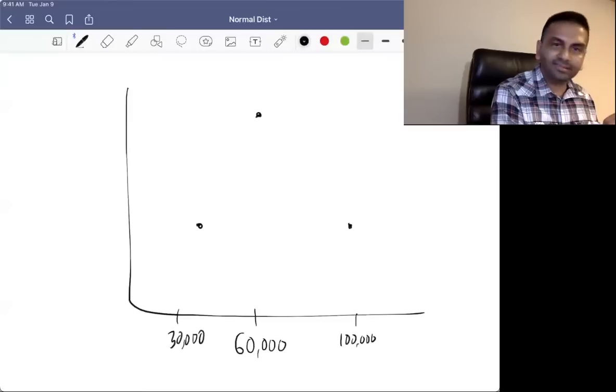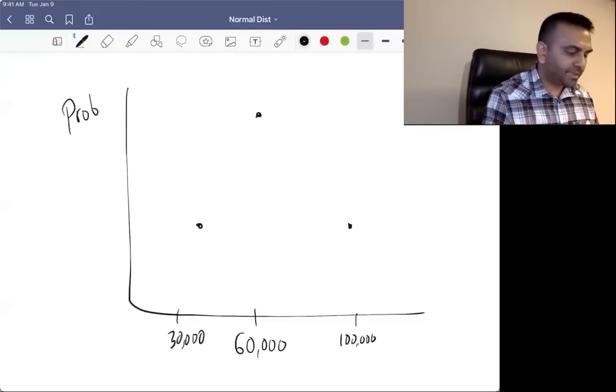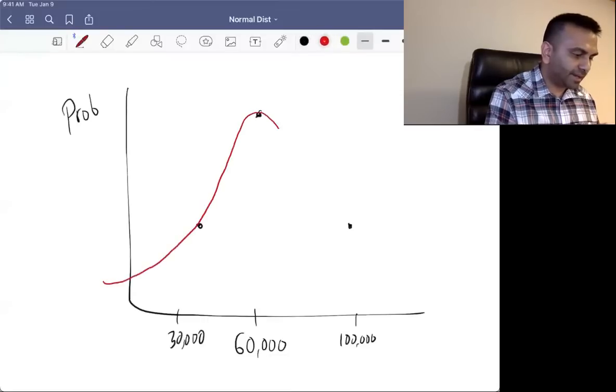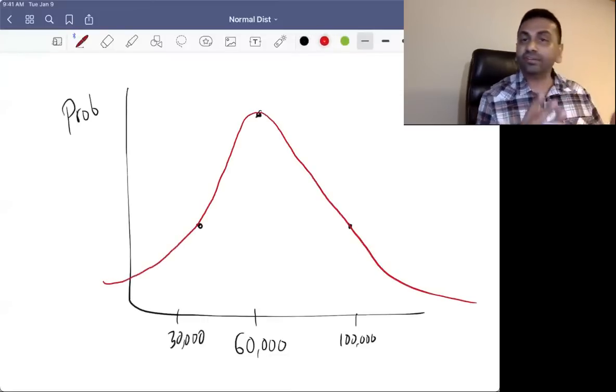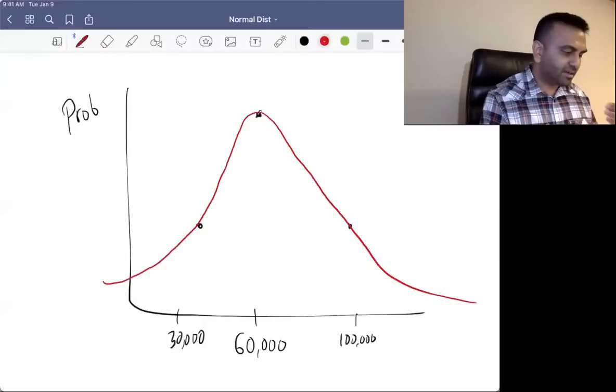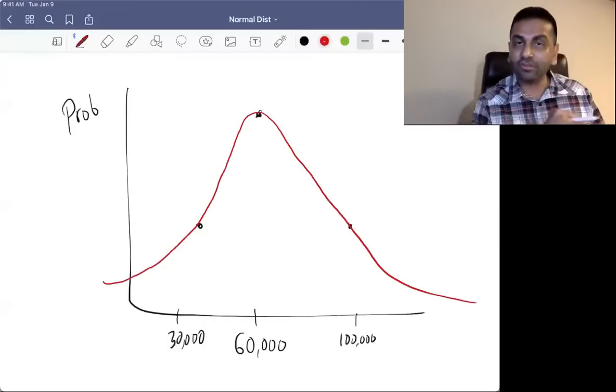Again, the y-axis is the likelihood, the probability of observing that income. So $60,000 is a lot more common than those. And the further you move, the less and less likely you are. And that sort of looks like a bell curve. So this is called the normal distribution, the bell curve.